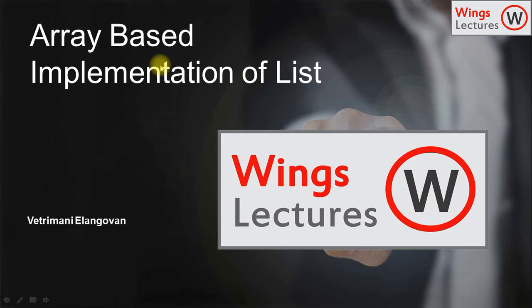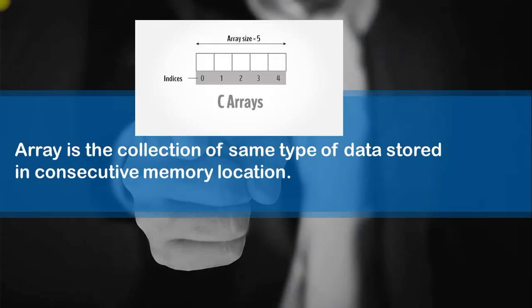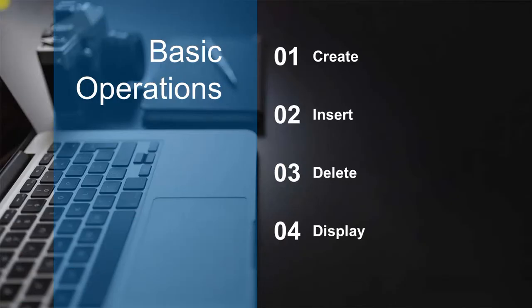Before we start this session, I want to explain again what an array is. An array is an ordered collection of elements stored in a continuous memory location. The array always starts from index 0 and the last element is always n. An array is a collection of the same type of data stored in consecutive memory locations. The basic operations available in a list are: insert, delete, find, next, previous, print list, and make empty.